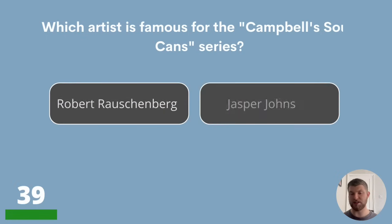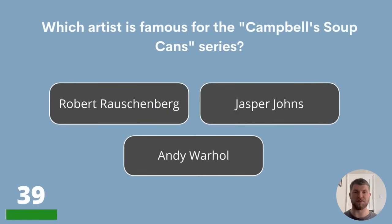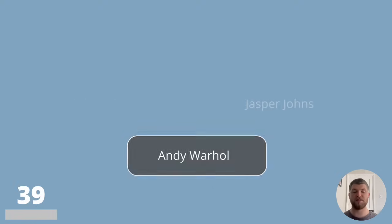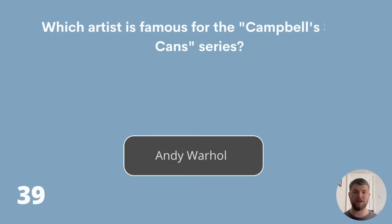Question 39. Which artist is famous for the Campbell's Soup Cans series? Robert Rauschenberg, Jasper Johns or Andy Warhol? The answer is Andy Warhol.